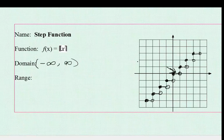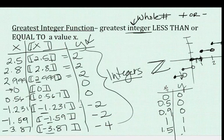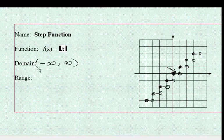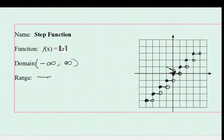The range, however — remember on our chart before, our range was all whole numbers. There were no decimals, and that's going to happen anywhere you do greatest integer. So we know our range is just integers. We use the symbol Z with the double bar in the middle. That's all for domain and range.